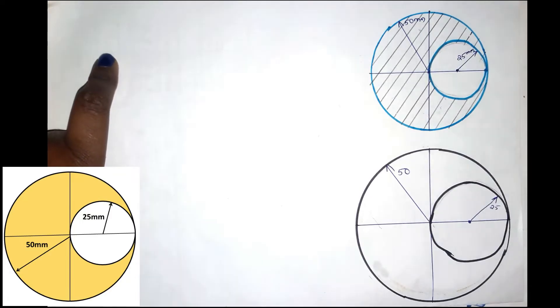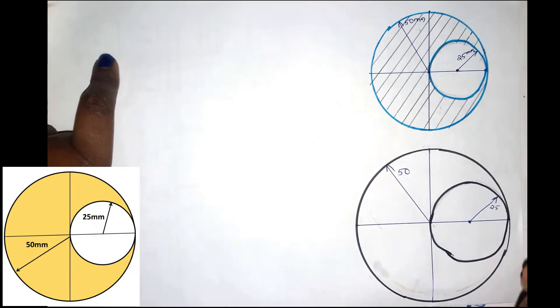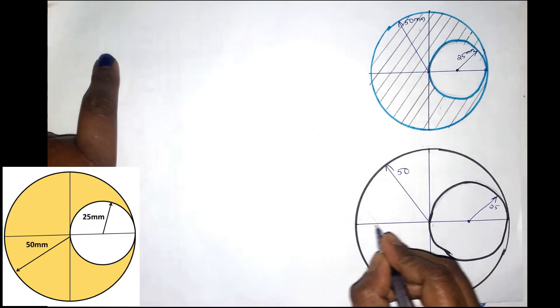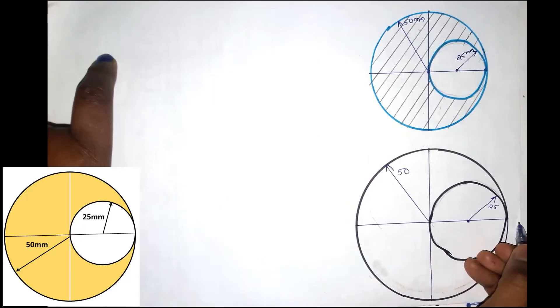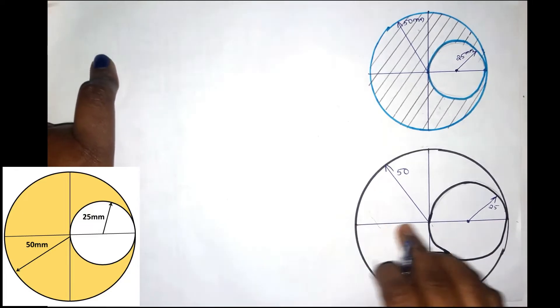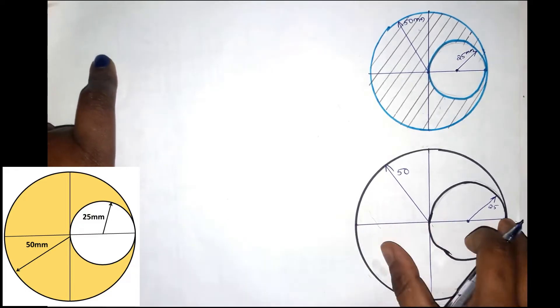The second step is to mark the reference axis. In this axis, it is symmetrical, so we mark the one axis.